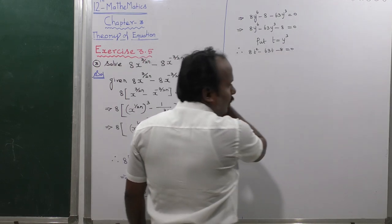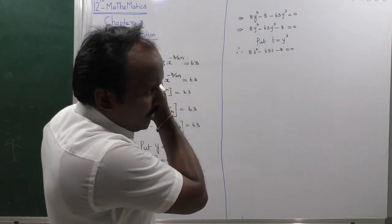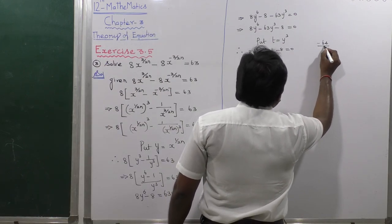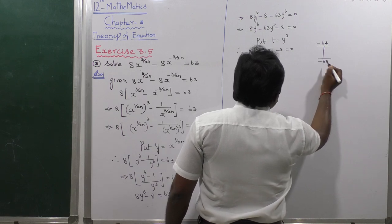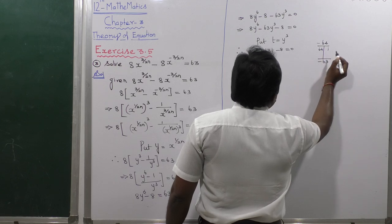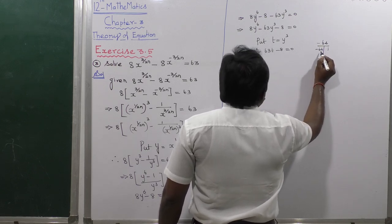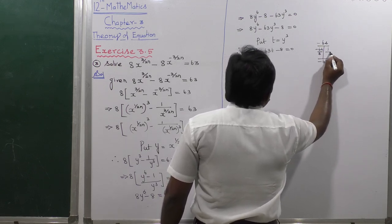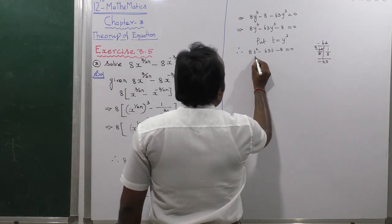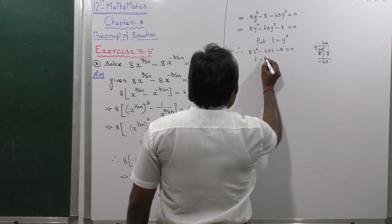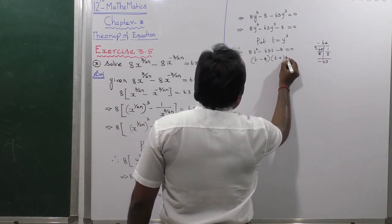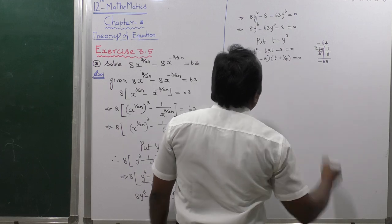This is a quadratic equation; we use the factorize method. Multiplication gives 64, addition gives minus 63 — factors are 64 and 1, divided by 8 each, giving t minus 8 and t plus 1 by 8, that is equal to 0.